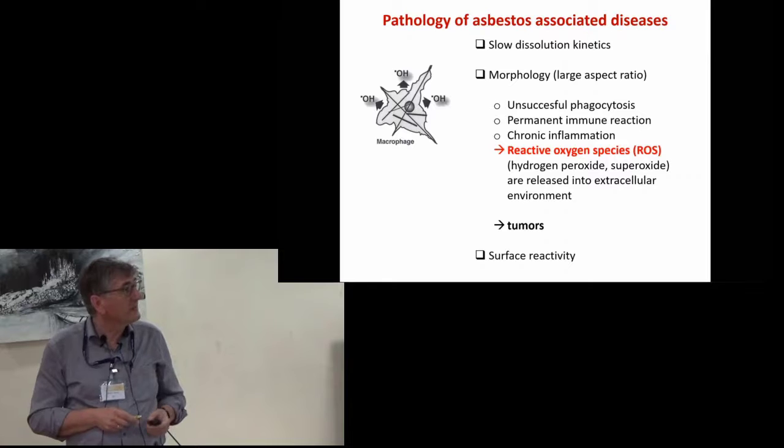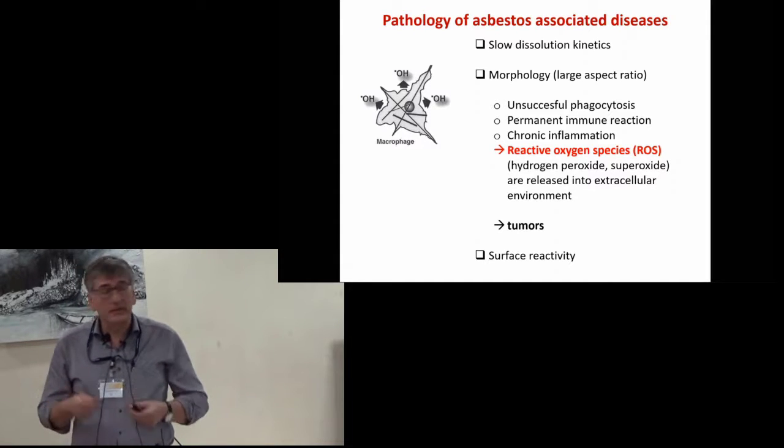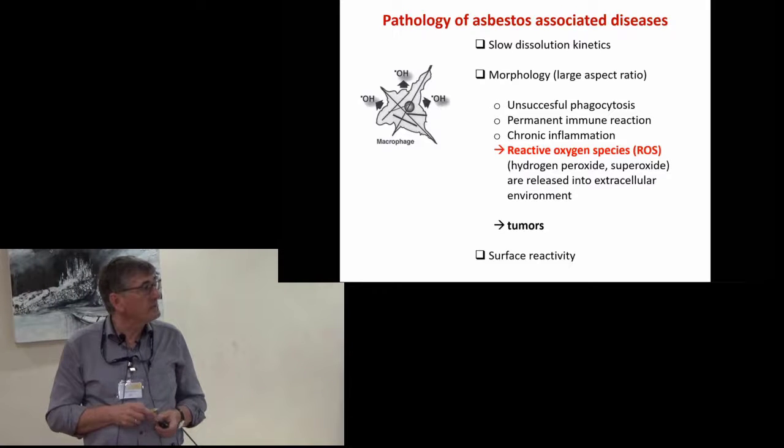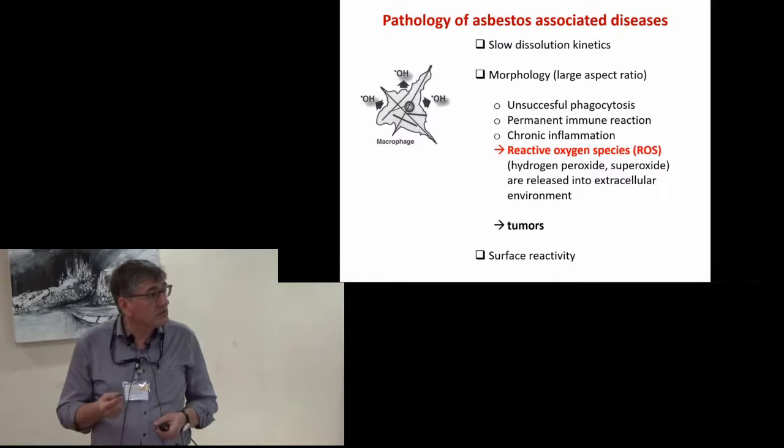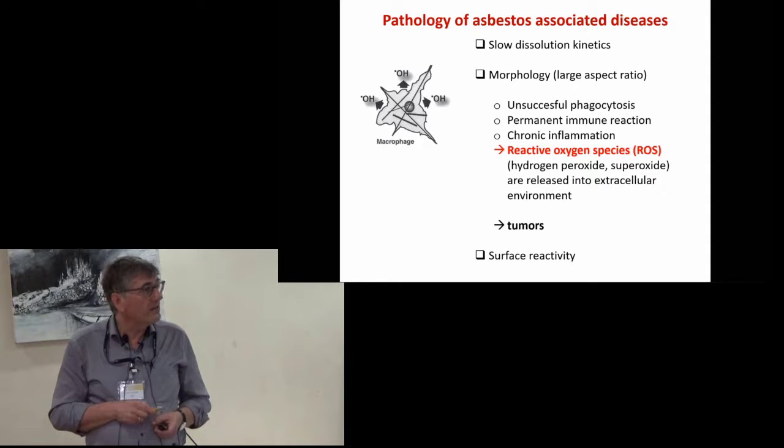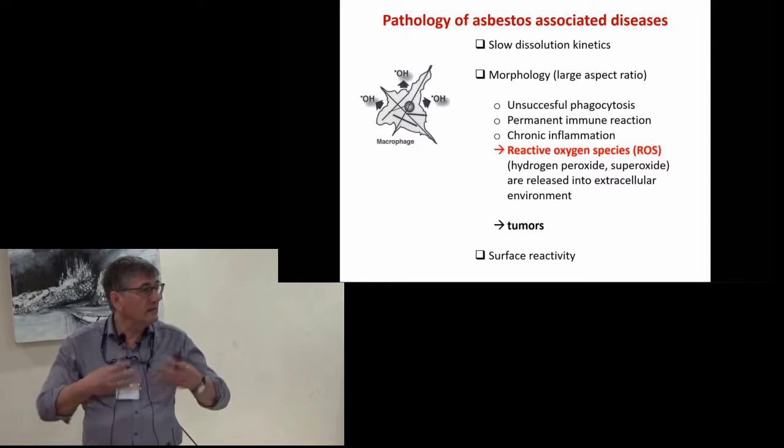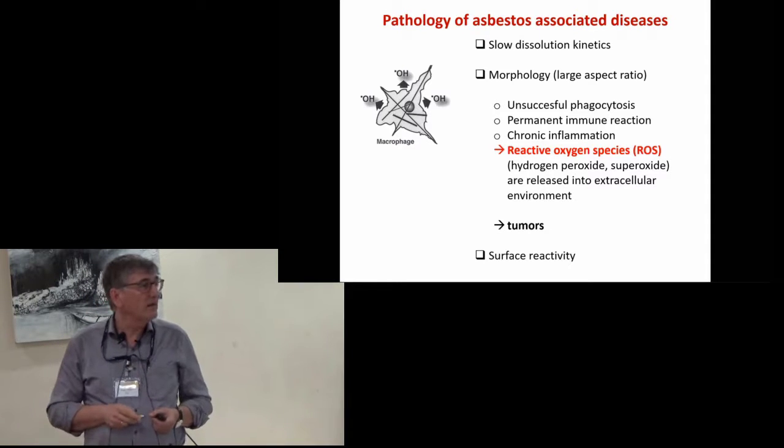Why is it so dangerous? There are several reasons: slow dissolution kinetics, morphology, and surface reactivity. For example, the large aspect ratio leads to continuous but unsuccessful attempts of macrophages to remove these fibers. This unsuccessful phagocytosis causes a permanent immune reaction leading to chronic inflammation during which reactive oxygen species like hydrogen peroxide or superoxide are released into the extracellular environment, thus triggering tumor formation.